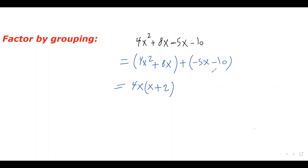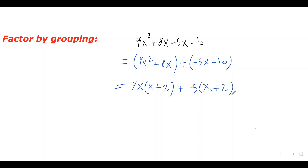Now move on to the second group. We have to factor this in a way that we end up with the same expression inside the bracket, because I need that for the next step. I factor out a negative 5. Negative 5x over negative 5 leaves x, and negative 10 over negative 5 is positive 2. So I have the exact same expression inside this bracket.